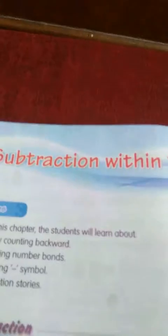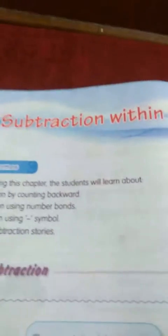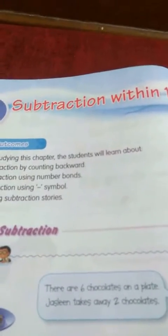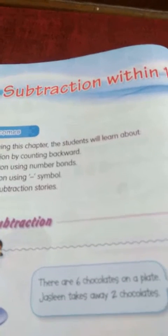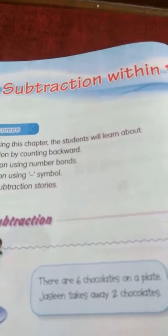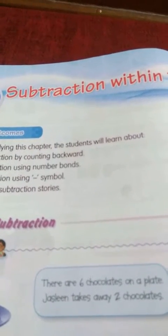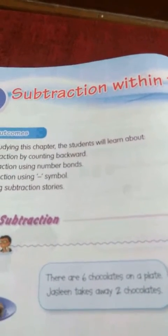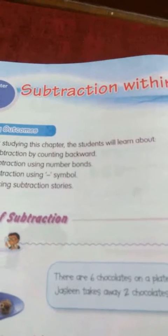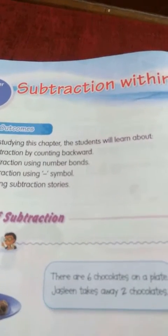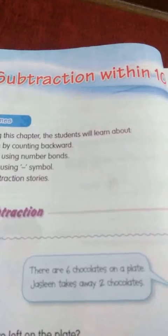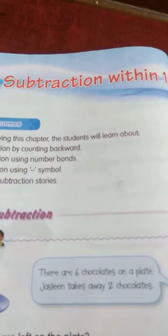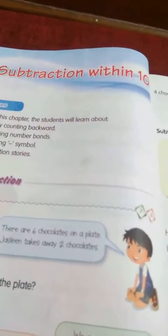10 digit ke andar jo bhi aata hai subtraction, wo me aaj aapko sikhha hoongi. Subtraction matlab jho left hoti hai aapke paas, jho kharch hota hai aapke paas, us ko hum log bolte hai subtraction. Left, aapke paas left hai, phir pehle kitna tha, phir aapke paas kitna reh gaya — yeh jo hum log bolte hai, us ko bolte hai subtraction.